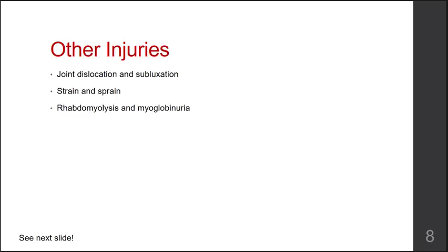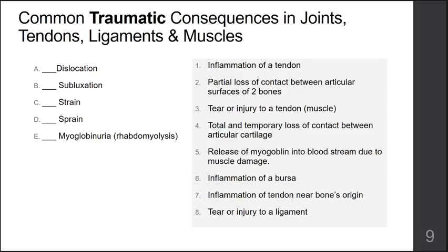Now we'll look at some other types of musculoskeletal injuries. We spent quite a bit of time talking about fractures, but others include joint dislocations and joint subluxations. We'll look at the difference between a strain and a sprain, and define what rhabdomyolysis and myoglobinuria are. These conditions can occur on their own, but sometimes they can also occur alongside a fracture depending on the mechanism of injury.